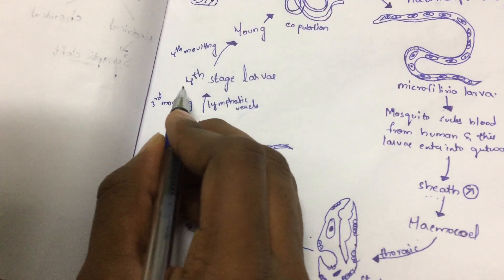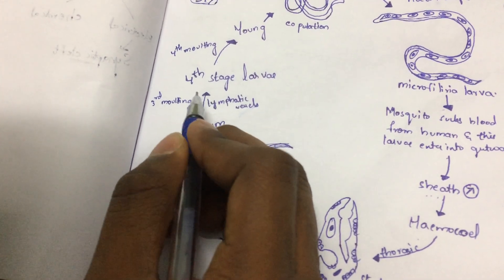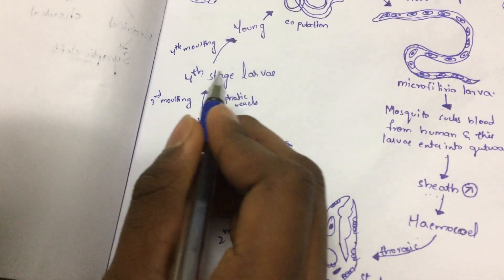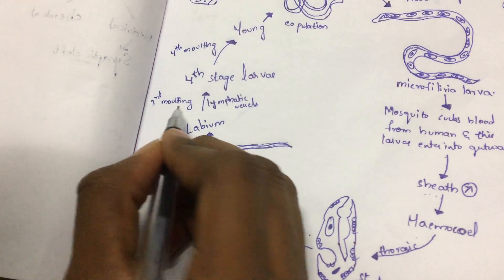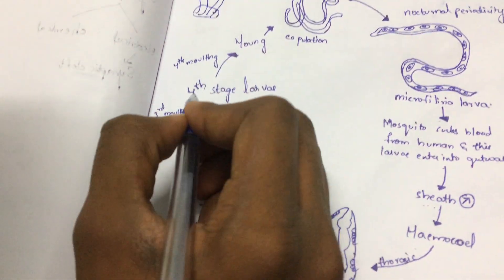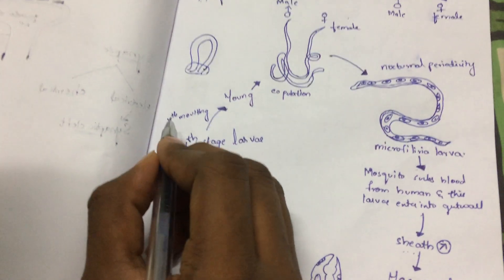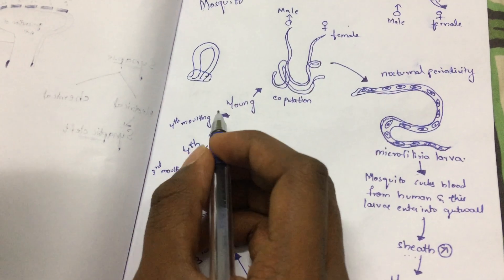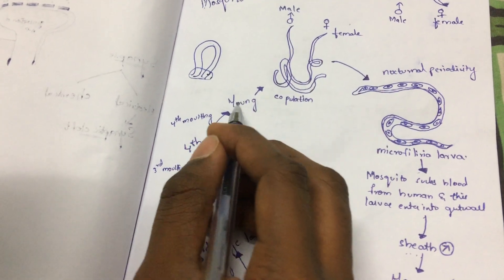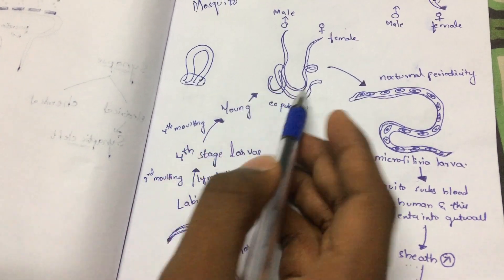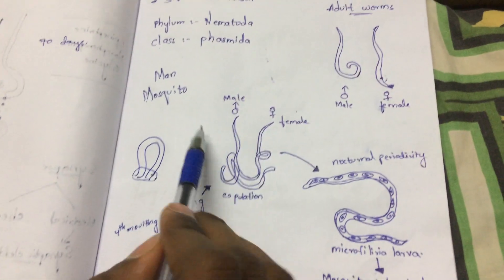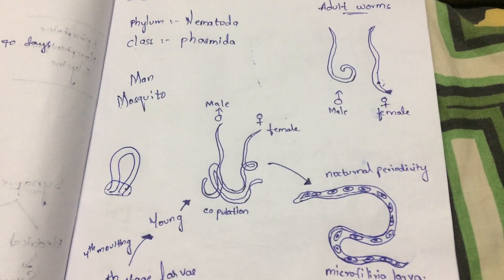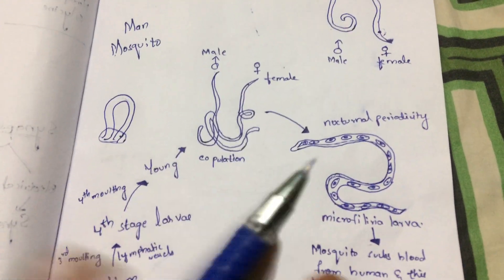The fourth stage larva is formed by undergoing third molding. This fourth stage larva undergoes fourth molding and finally leads to the young ones — the adult worms — and totally the cycle will be repeated again.